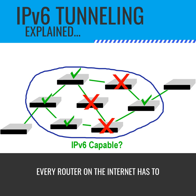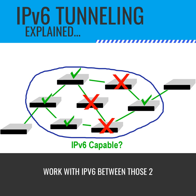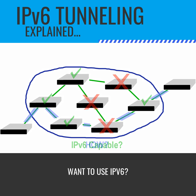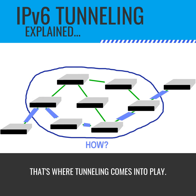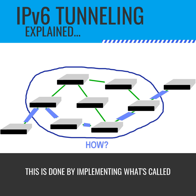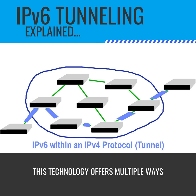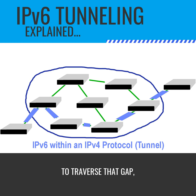For IPv6 to work, every router on the internet has to work with IPv6 between those two connections. So how do we get around this if we want to use IPv6? How do we bridge that gap? That's where tunneling comes into play — by implementing what's called an IPv4 to IPv6 tunnel. This technology offers multiple ways to traverse that gap.